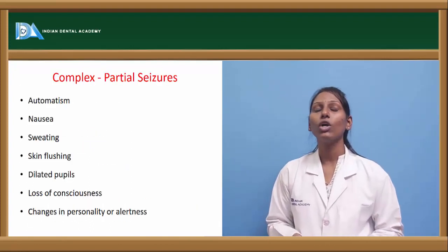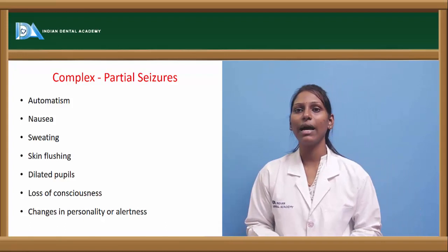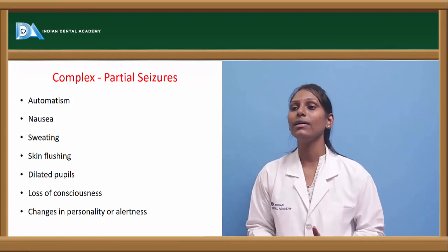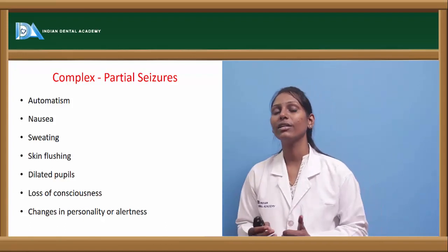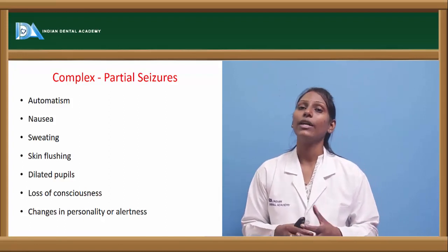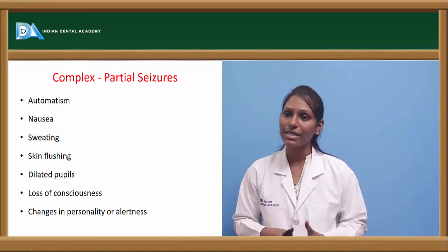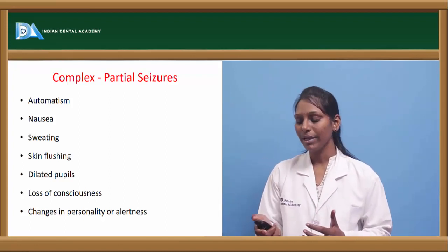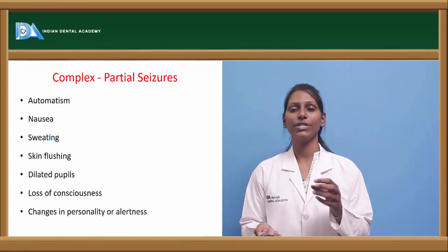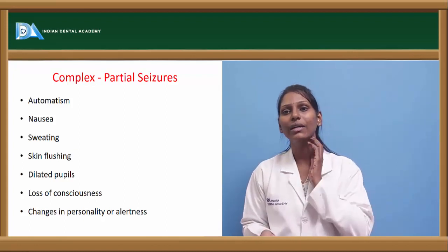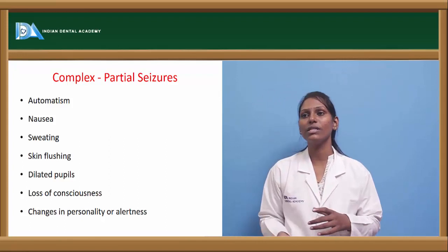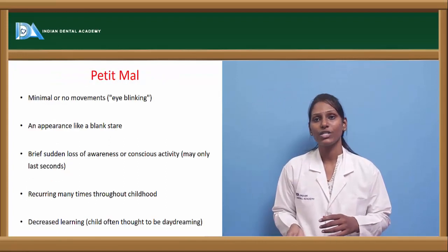In complex partial seizures, patients will have automatism, nausea, sweating, skin flushing, and dilated pupils. There is loss of consciousness along with changes in personality or alertness, and patients exhibit behavioral changes.